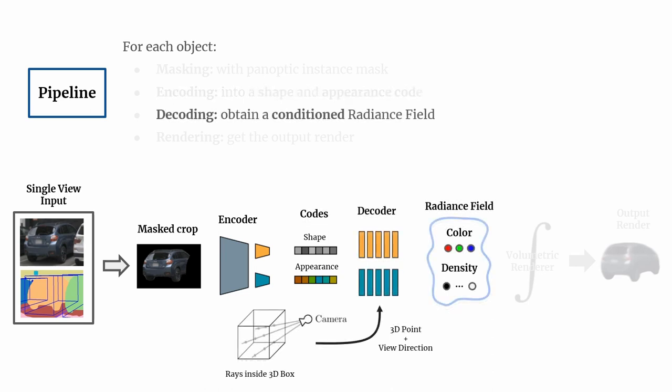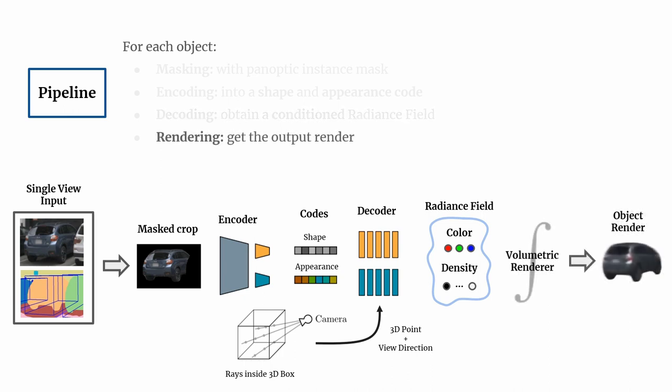These codes condition a neural radiance field represented by two separate MLPs that output color and density values respectively. We query the radiance field for points along all rays belonging to the foreground and background pixels, and perform volumetric rendering in order to generate a rendering of the input image.